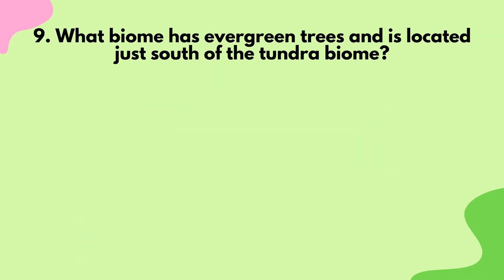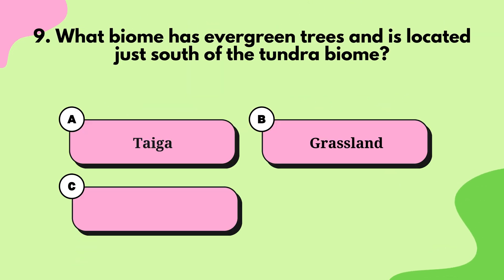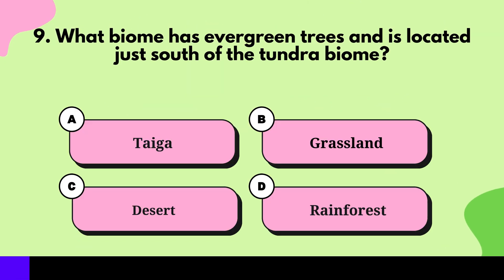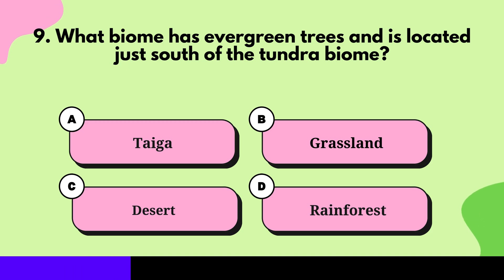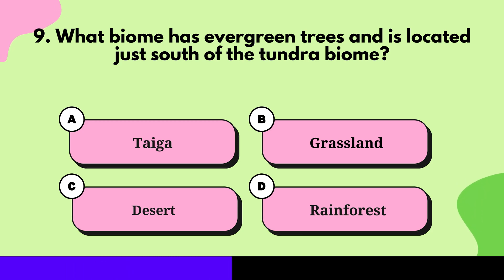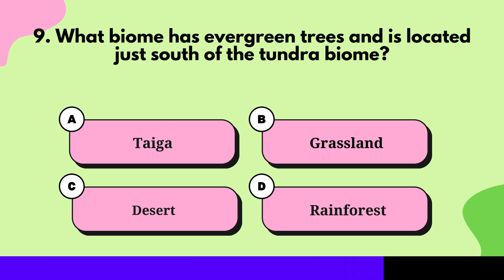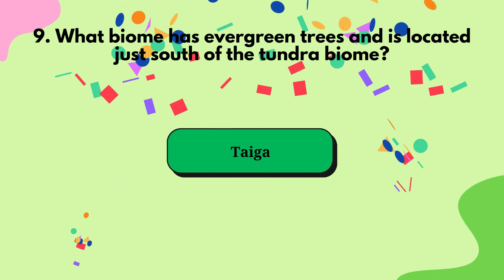What biome has evergreen trees and is located just south of the tundra biome? Taiga.